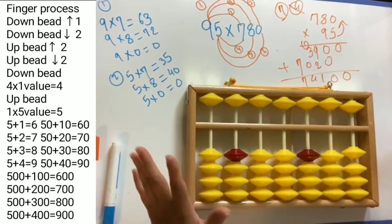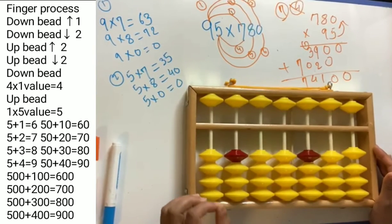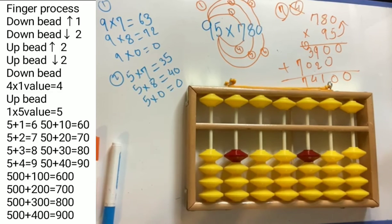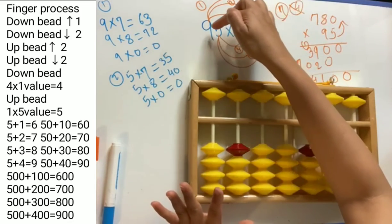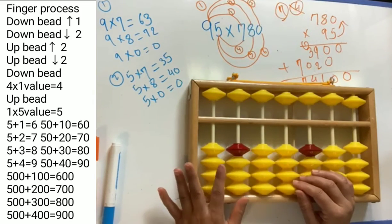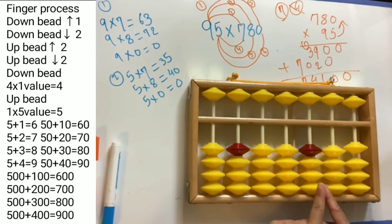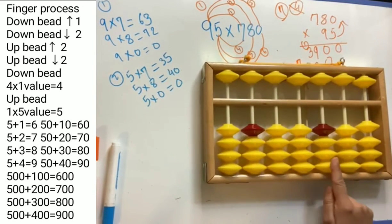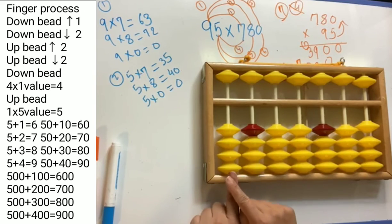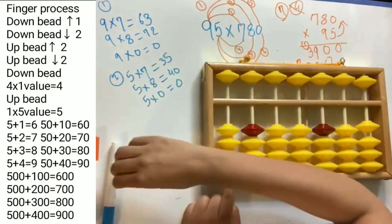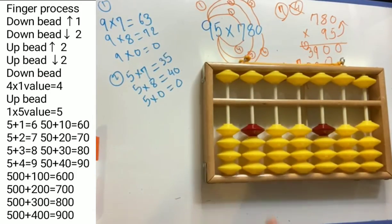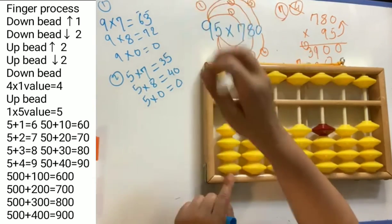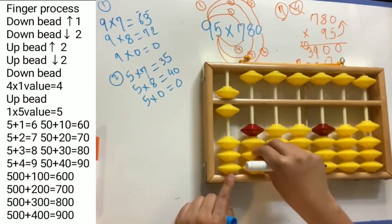Let's place this answer on the abacus — this is a little bit tricky, so please concentrate. We have 1, 2, 3, 4, 5 digits in our equation, which means you have to start from the 5th rod — this is my marked rod. Count 1, 2, 3, 4, 5 and start placing the first group answer here. 9 × 7 = 63: 6 is in the 10's position, 3 is in the 1's position, so 6 goes to this rod and 3 goes to this rod.